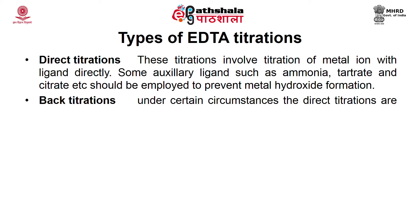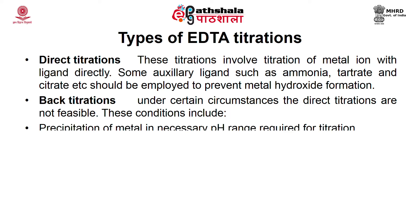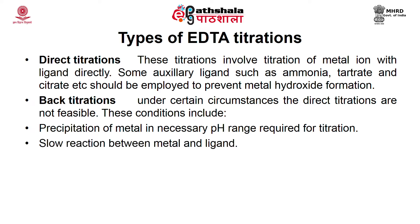Back titrations are required where direct titrations are not feasible. These conditions include precipitation of metal in the necessary pH range, slow reaction between metal and ligand, or unavailability of a suitable indicator. For example, if we titrate aluminium with EDTA, aluminium is added to EDTA and the solution is heated so that the aluminium-EDTA complex formation is complete. The excess EDTA is then titrated with another metal ion — this is the principle of back titration.